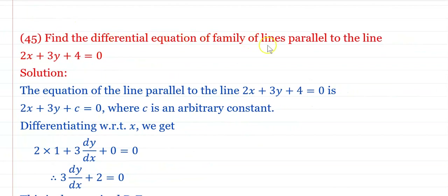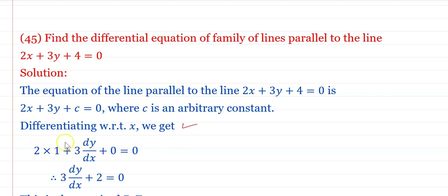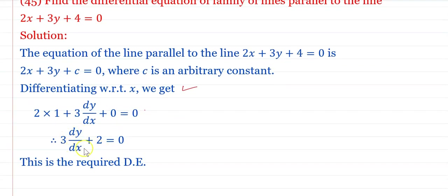Find the differential equation of the family of lines parallel to 2x + 3y + 4 = 0. The parallel line has equation 2x + 3y + c = 0, where c is an arbitrary constant. Differentiating with respect to x: 2 + 3·(dy/dx) = 0. Therefore 3·(dy/dx) + 2 = 0 is the required differential equation.